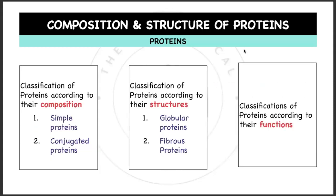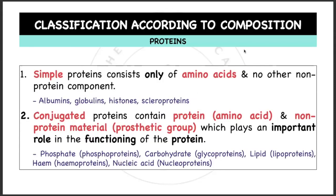Composition and structure of proteins: proteins can be classified into composition, into their structures, or according to their functions. If you classify proteins according to their composition, it would be simple proteins and conjugated proteins. If you classify them according to their structures, it would be globular proteins and fibrous proteins.